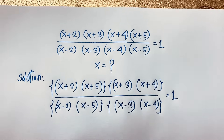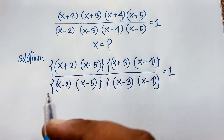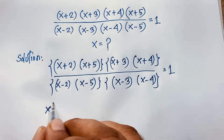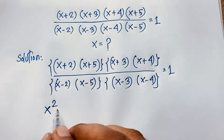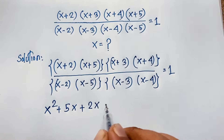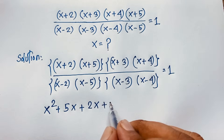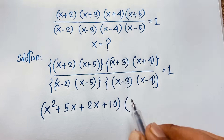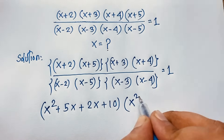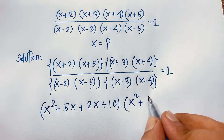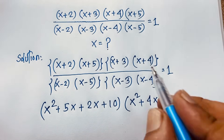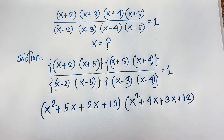This is equal to 1. I solve this question step by step. So (x+2)(x+5): x times x is x², x times 5 is 5x, 2 times x is 2x, 2 times 5 is 10. Then for (x+3)(x+4): x² plus 4x plus 3x plus 12, over...